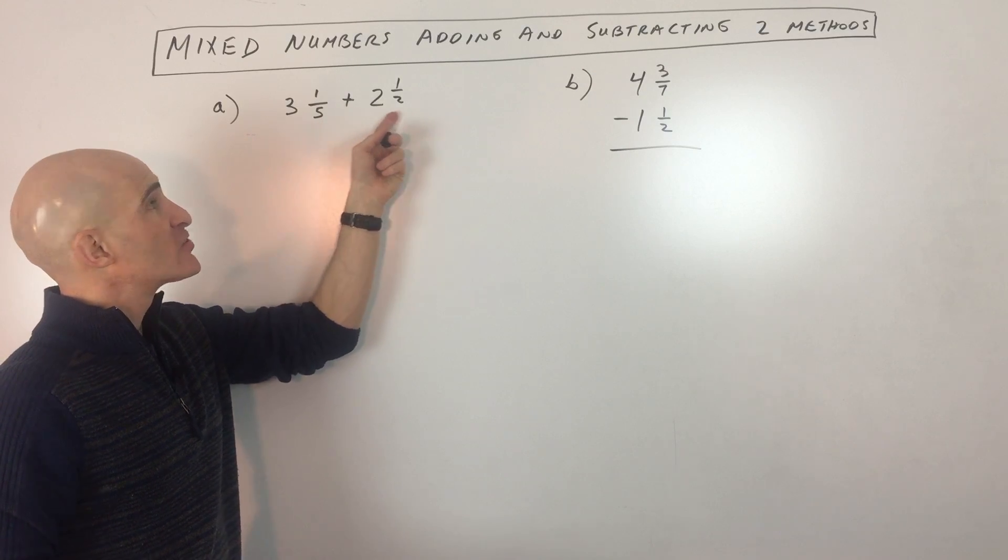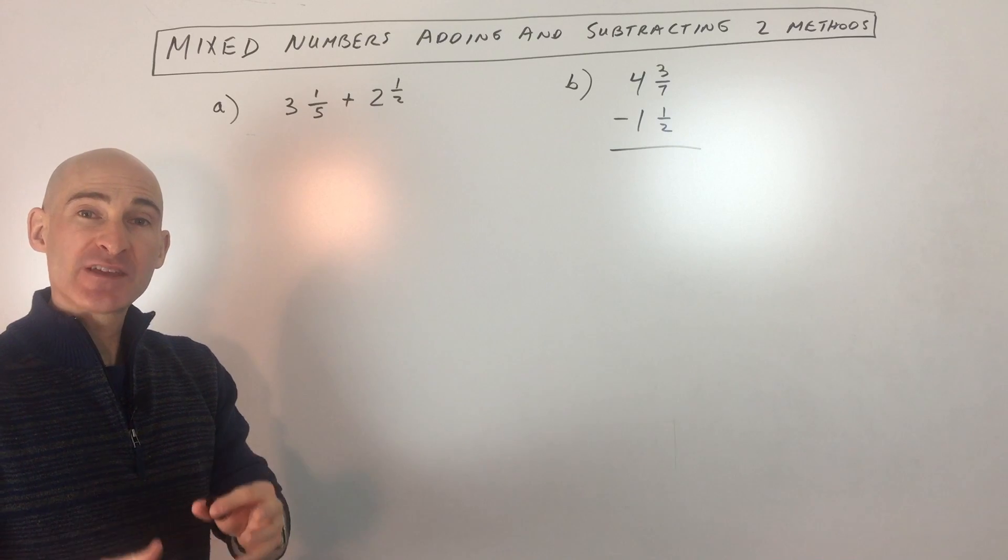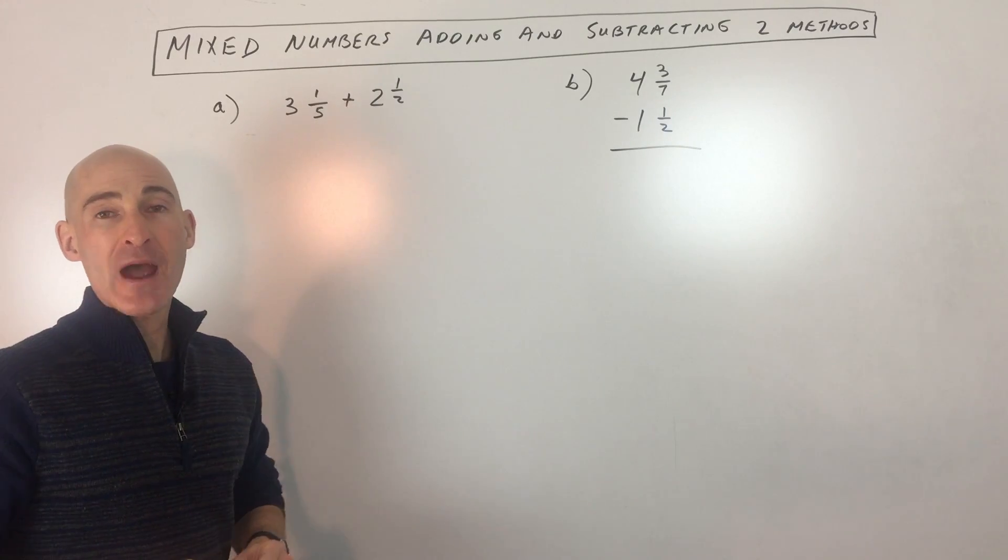This one here, three and one-fifth plus two and one-half. Now the first method that I'm going to show you is you're going to convert these mixed numbers back into improper fractions.